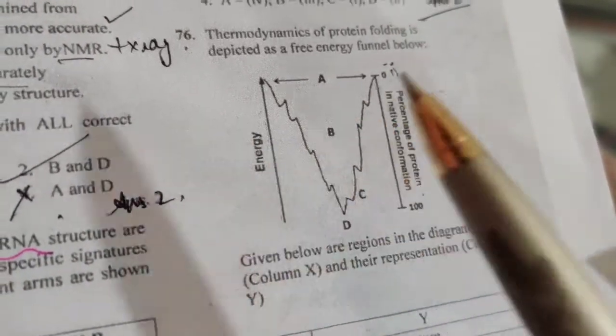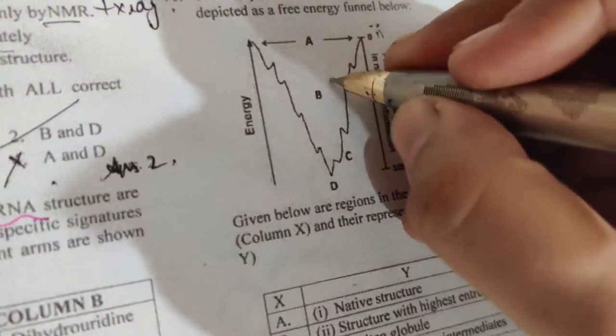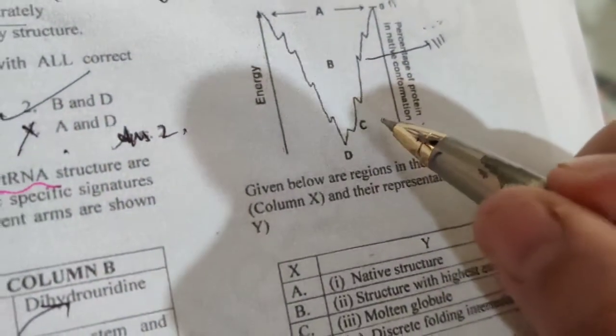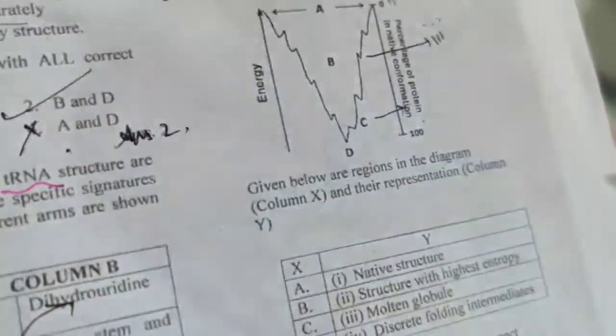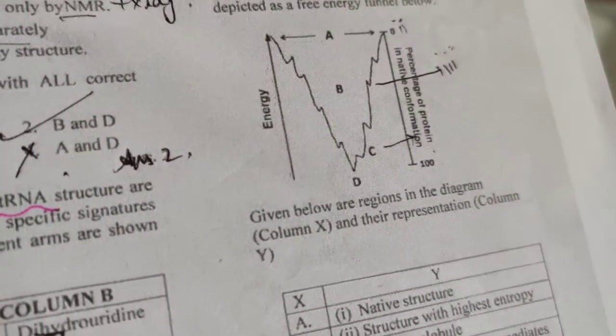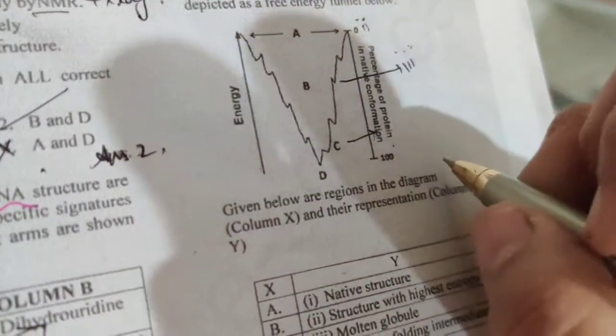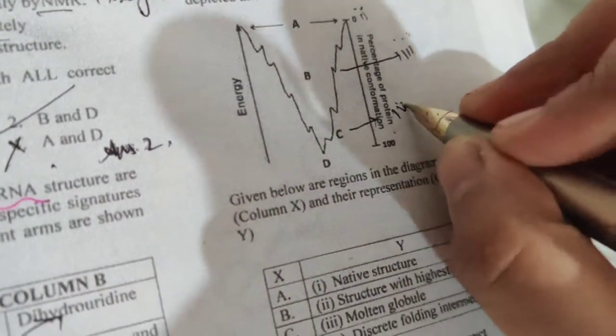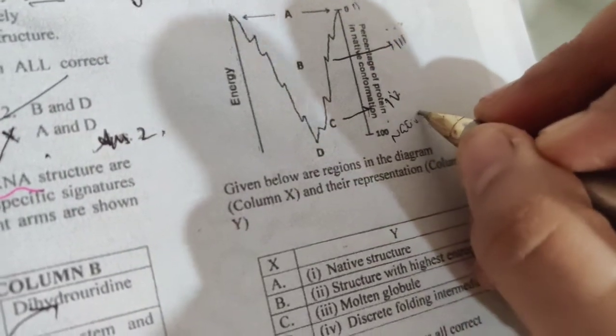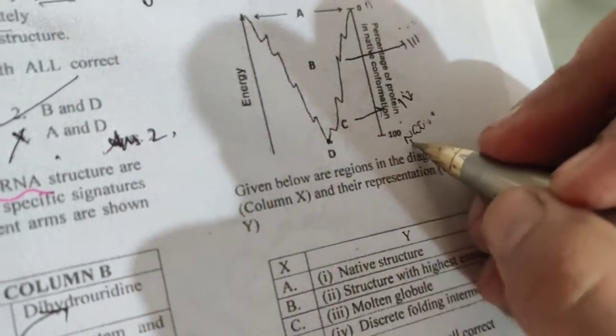Transition state. So this means what has been done—it's a molten globule. Third, C is that our folding has increased a lot. Native structure has become something—that is discrete folding intermediates. And D is what is native structure, the lowest entropy, already folded. That is a native structure.